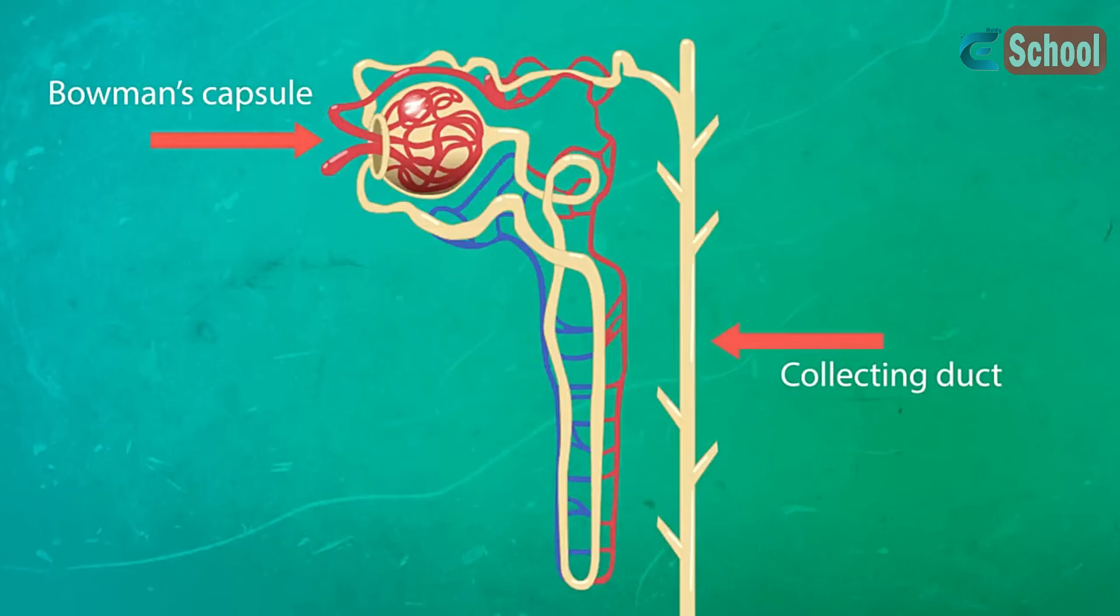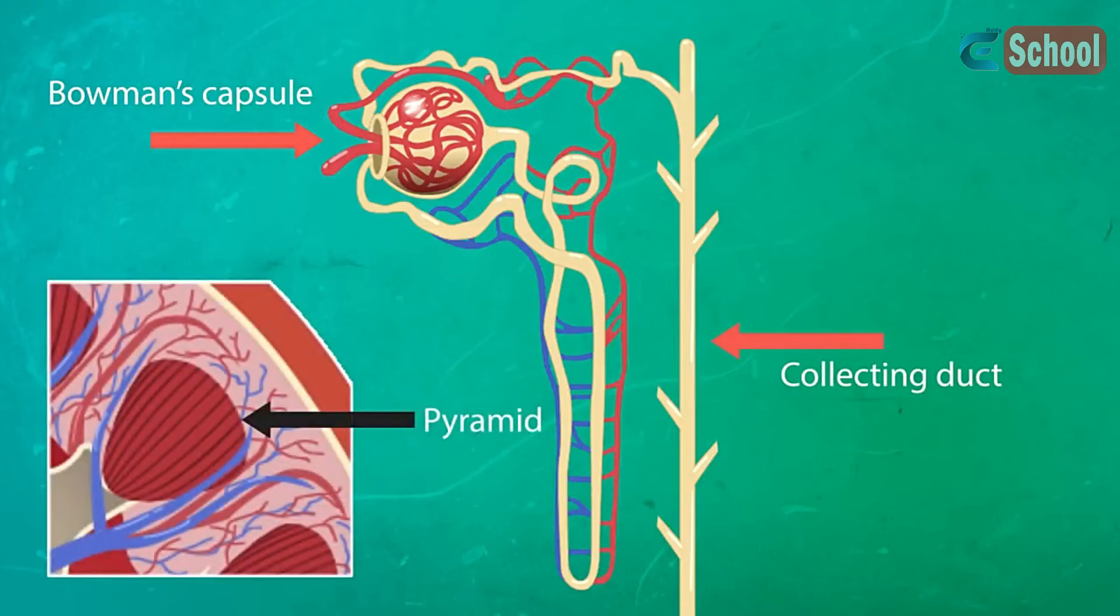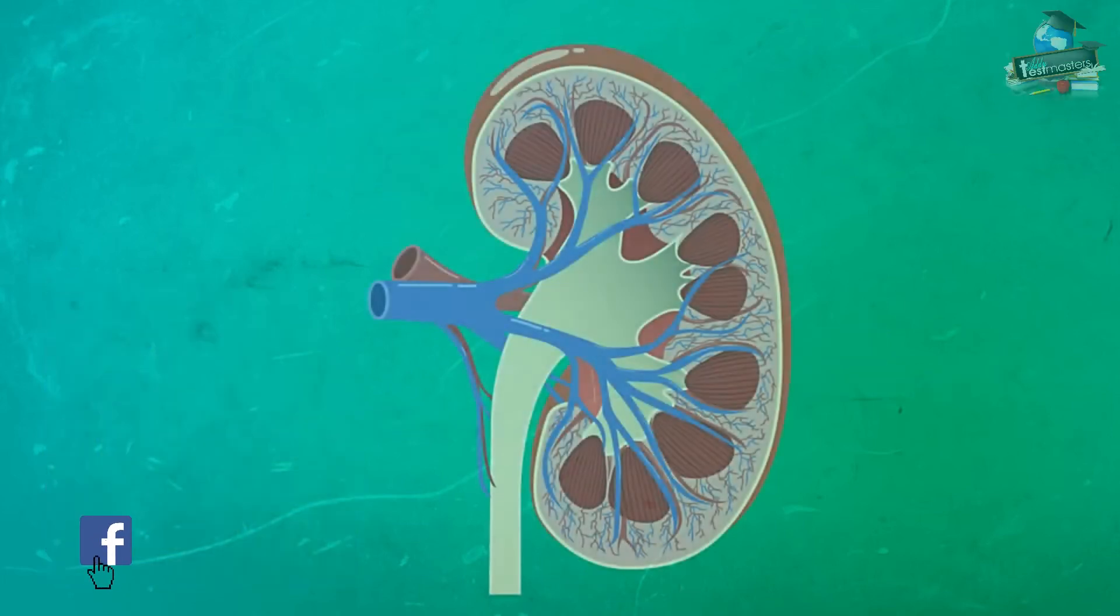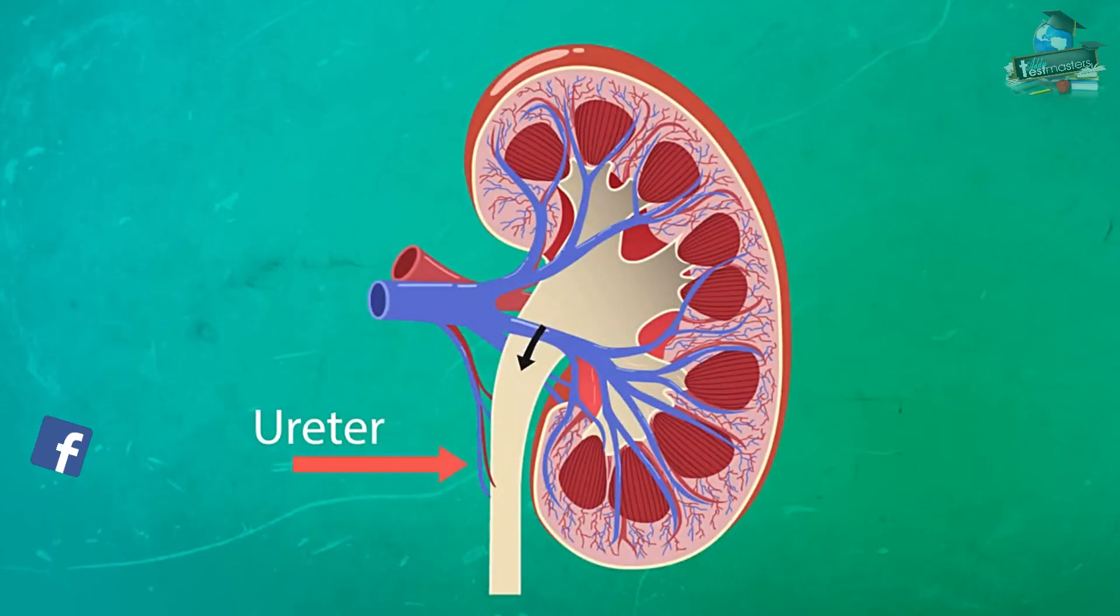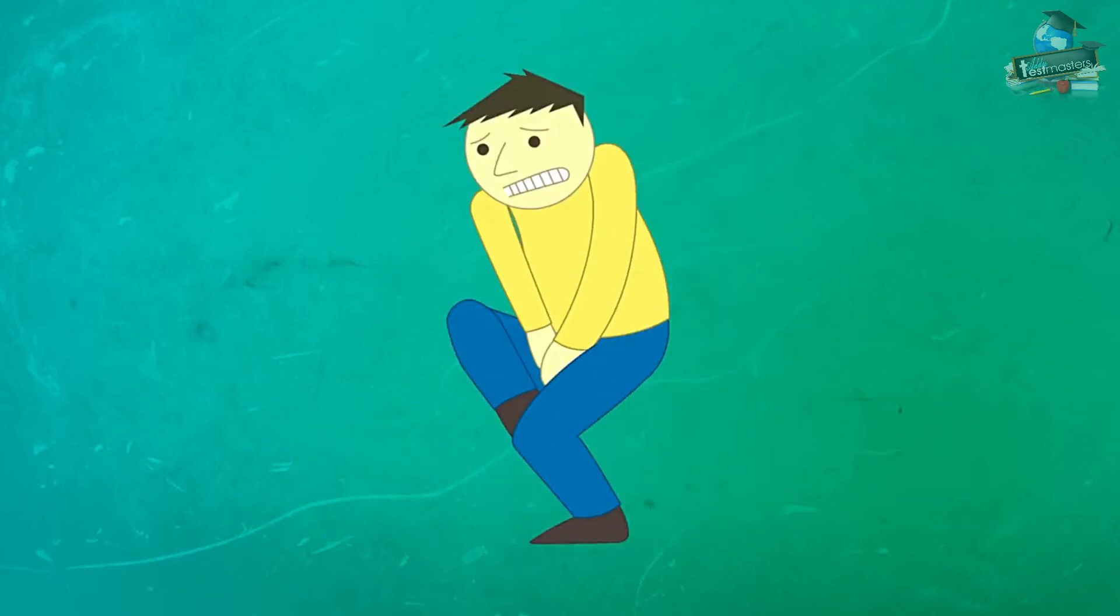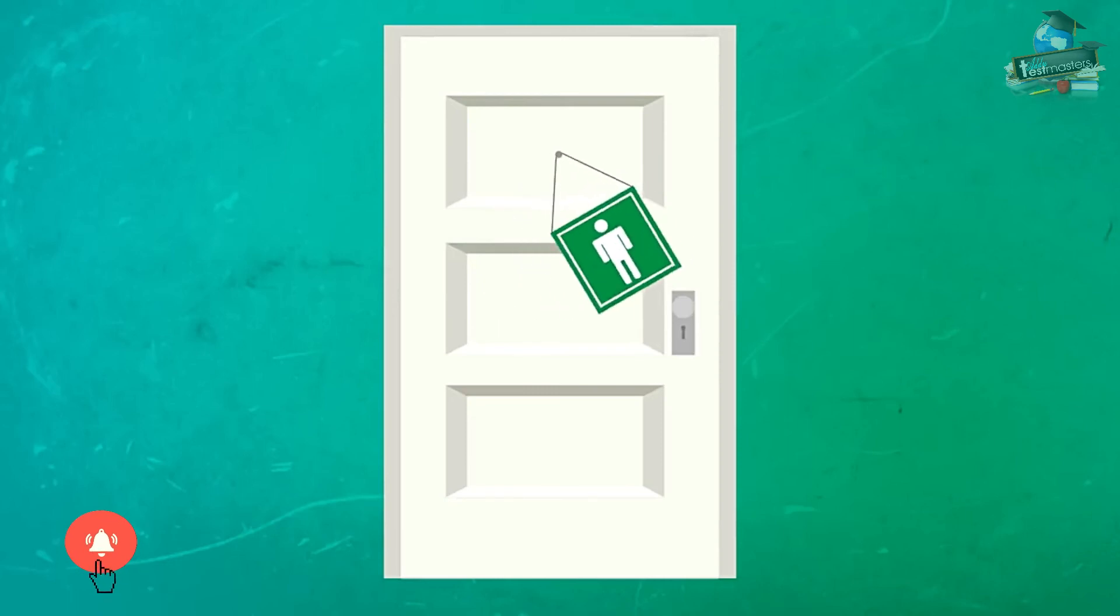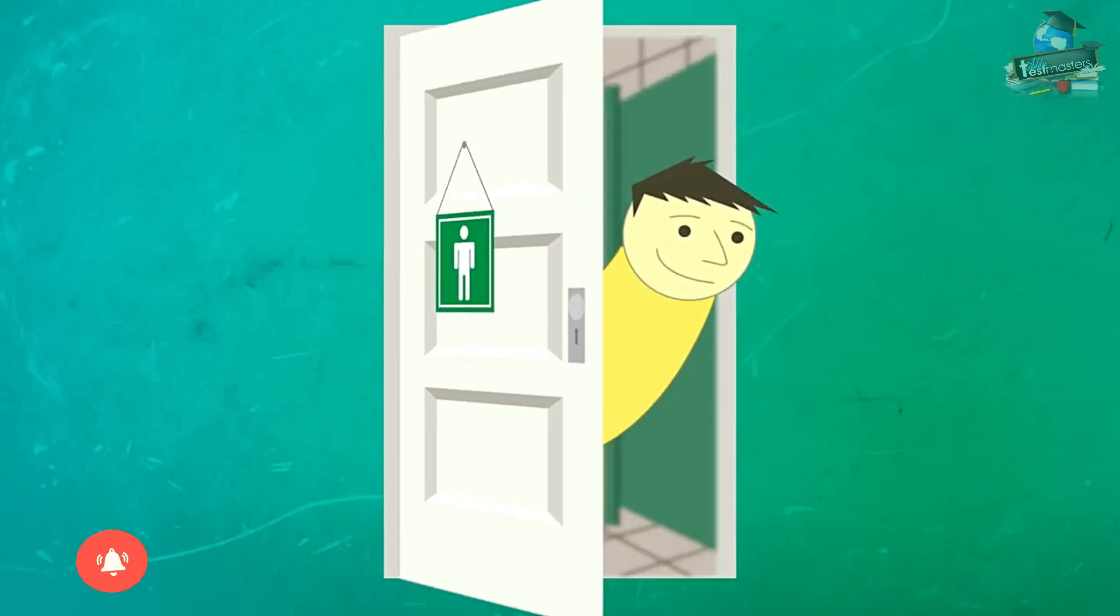The collecting duct takes waste down to an area of the kidney called the pyramid, where it collects all the waste from all the nephrons. Then it flows out of the kidney in the ureter down to the bladder, where it's stored until the person gets that urge—you know, the urge when you need to go—and then it's released out of the urethra. Ah, that feels better.